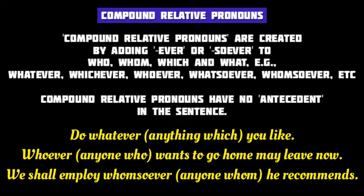Next we have compound relative pronouns. Compound relative pronouns are made by adding 'ever' or 'soever' to who, whom, which, and what — for example, whatever, whichever, whoever, whatsoever, whomsoever, etc. These compound relative pronouns have no antecedent in the sentence. For example, 'Do whatever you like' — 'whatever' means 'anything which.' 'Whoever wants to go home may leave now' — 'whoever' means 'anyone who.' 'Whomsoever' is made by adding 'soever' to 'whom.' Before all compound relative pronouns, there is no antecedent.